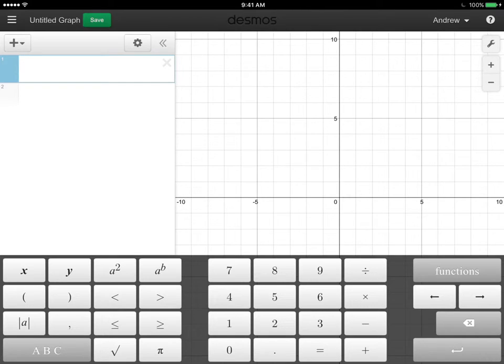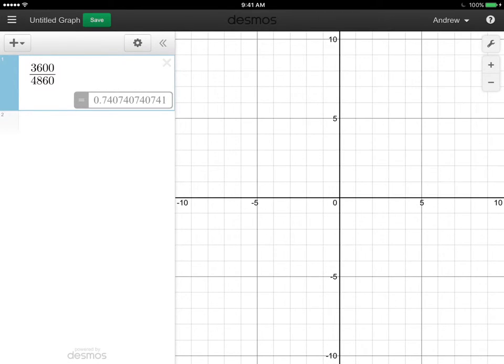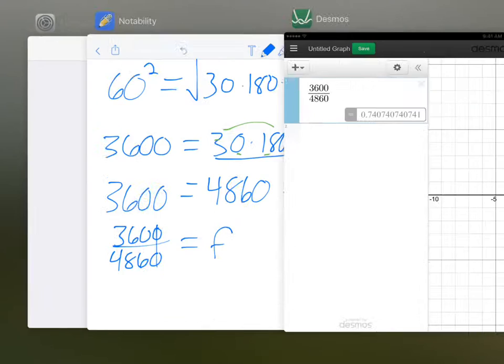All right, so that's 3,600 divided by 4,860. All right, so I'm getting a coefficient of approximately 0.74. We'll round to the nearest hundredth.